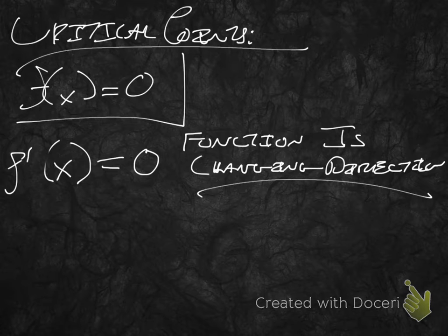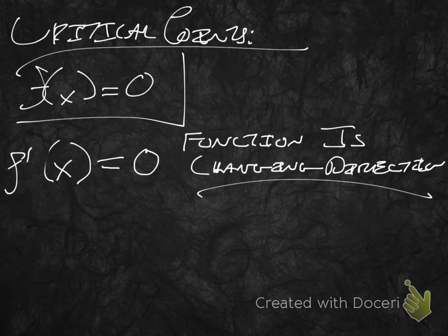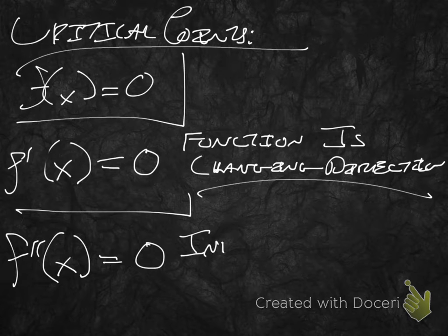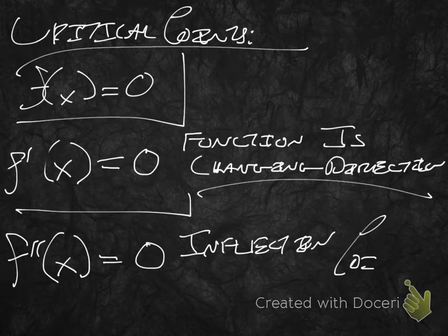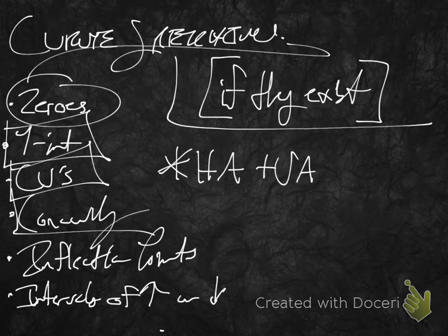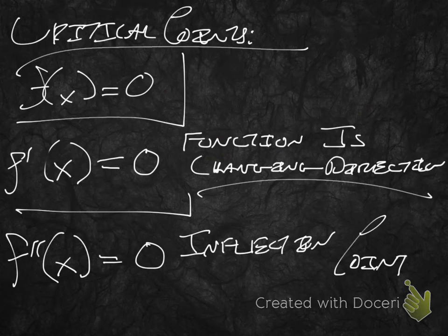Now let's look at f double prime of x. When f double prime of x equals zero, that means you have what is called an inflection point. An inflection point is when your function is changing concavity. So let's go ahead and talk about concavity, and while we talk about it, we will also talk about inflection points.